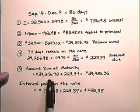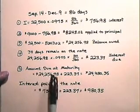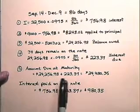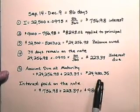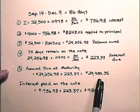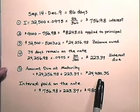Step 5, the amount due at maturity is the $24,256.98 plus the interest, $223.37, which gives us amount due of $24,480.35.